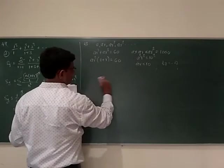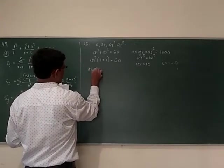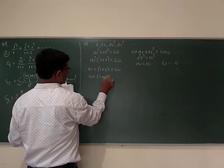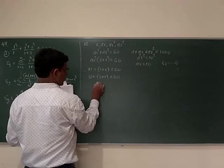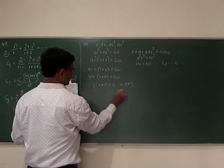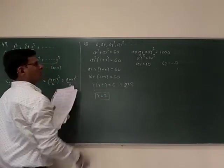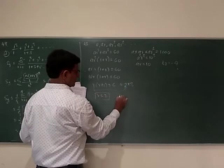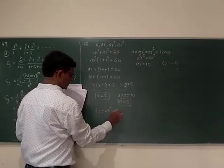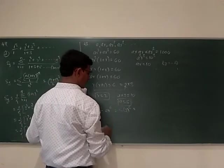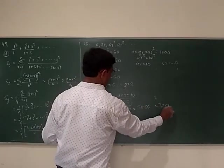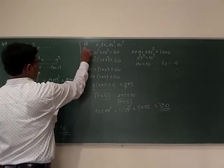From A cubed R cubed equals 1000, we get AR equals 10. Substituting: 10 times R times (1 plus R) equals 60, so R times (R plus 1) equals 6, which gives R equals 2. Therefore A equals 5. The 7th term is A times R raised to 6, which is 5 times 2 to the 6th equals 320. Option D.